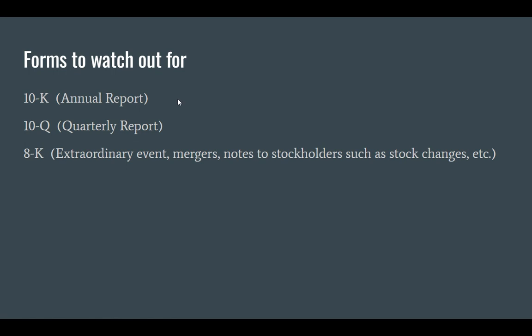Some forms I suggest looking for when doing company or industry-level research: look for things like 10-Ks, 10-Qs, and 8-Ks. 10-K forms are annual reports — required for publicly traded companies with an IPO. 10-Qs are more quarterly, so essentially the same sort of data but reported more often.